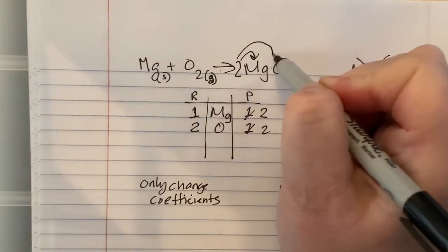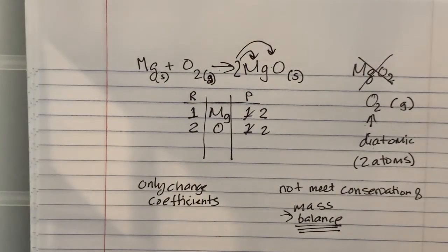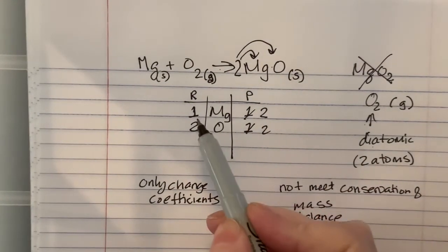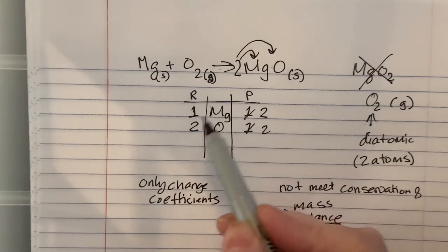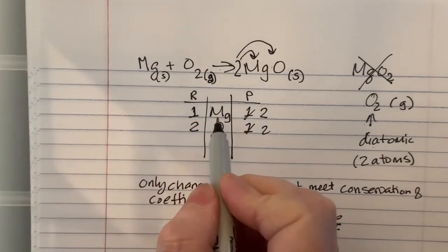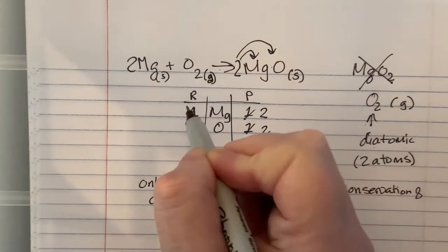Well, I got part way there. Now I have two oxygens, but now I'm off track on my magnesium. So I have to go back and I need two magnesiums, so I'm going to put a 2 in front of there.